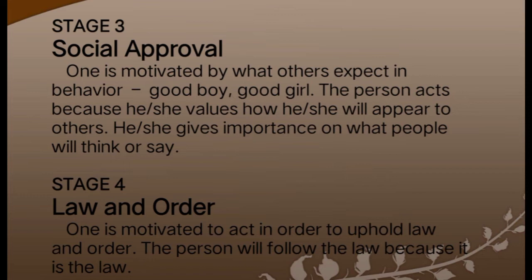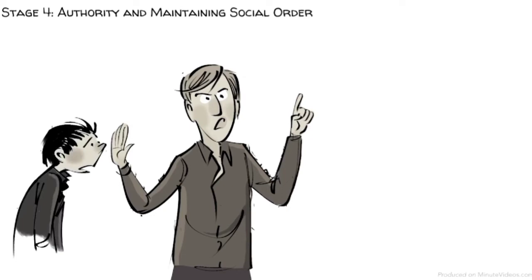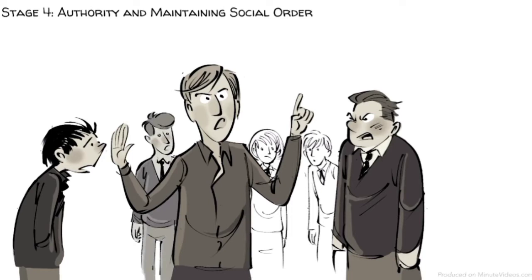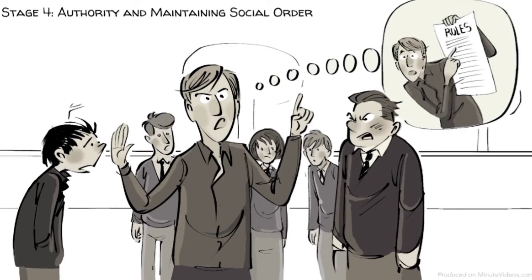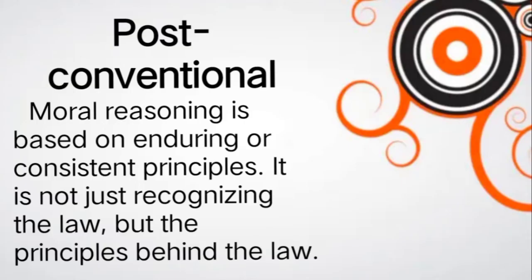Stage four is law and order: one is motivated to act in order to uphold law and order, and will follow the law because it is the law. As an example, when a teacher sees a group fighting, he immediately steps in and shouts, 'Stop! Fighting at school is forbidden!' He feels it is important to follow the rules, otherwise chaos breaks out, and that it is his duty to uphold the rules that sustain a functioning society. He asks himself, 'How can I maintain law and order?' This means the individual becomes aware of the wider rules of society, and judgments concern obeying rules to uphold the law and avoid guilt.